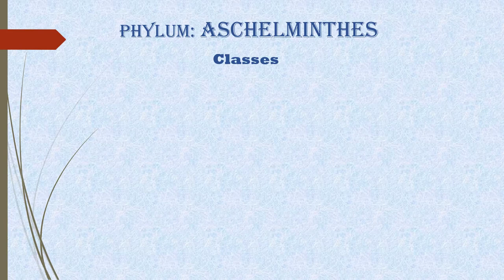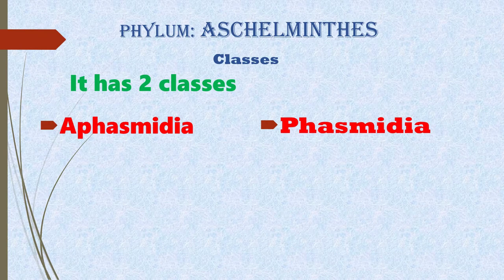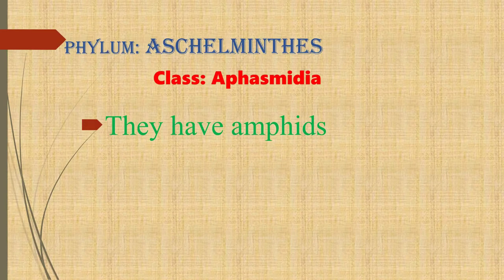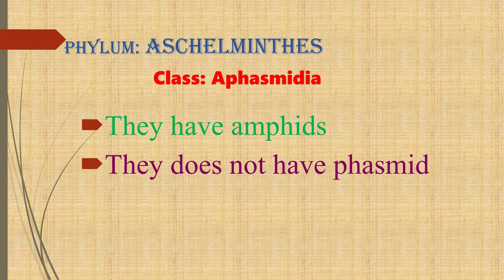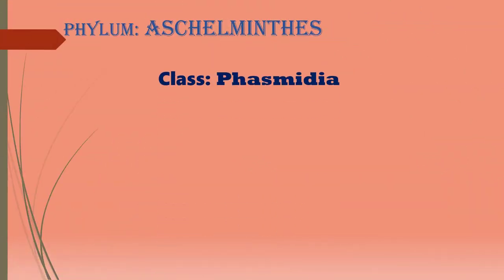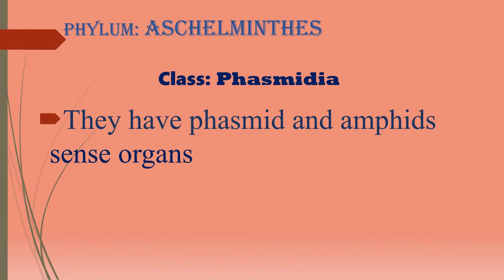Phylum Aschelminthes is divided into two classes based on sense organs: Aphasmidia and Phasmidia. Phasmids are chemoreceptors present in the tail. Aphasmidia means the chemoreceptor in the tail is absent, while Phasmidia means the chemoreceptor in the tail is present. Class Aphasmidia has amphids (sense organs in the lips) but no phasmids in the tail — example: whipworm. Class Phasmidia has both phasmids in the tail and amphids in the lips — example: Ascaris.